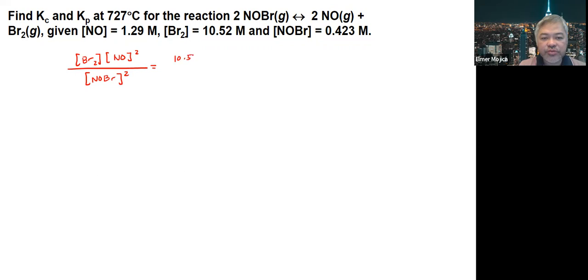If we replace the values here, you have 10.52 times 1.29 squared divided by 0.423 squared. If you input these numbers and do the operation, Kc equals 97.8.